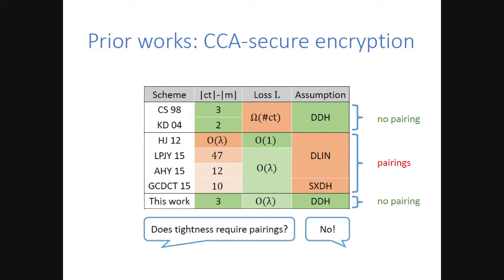The answer is no. We build an efficient CCA secure encryption scheme which tightly reduces to DDH—no pairing. This is a quantitative improvement upon prior tight constructions because the ciphertext overhead of our scheme is shorter: it's three group elements, which is one group element more than the most efficient CCA secure encryption scheme, Kurosawa-Desmedt. But it's also a qualitative improvement because we use a weaker assumption: DDH.